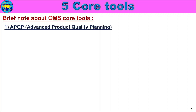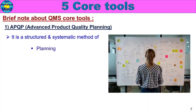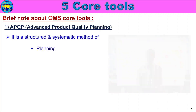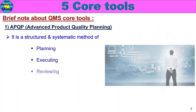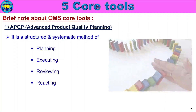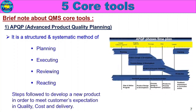First tool: APQP — Advanced Product Quality Planning. It is a structured and systematic method of planning, executing, reviewing, and reacting — steps followed to develop a new product in order to meet customers' expectations in quality, cost, and delivery. There are 5 phases in APQP.